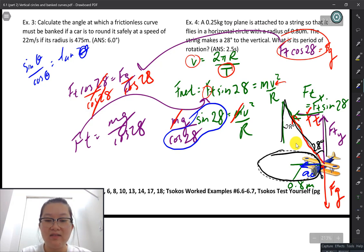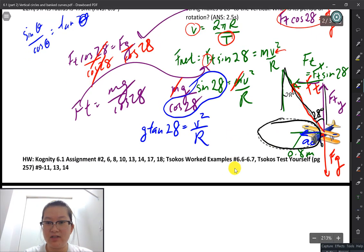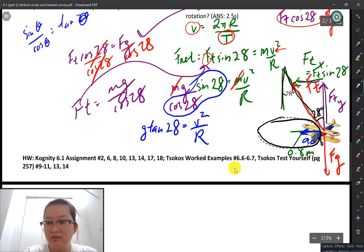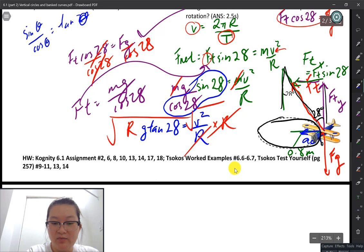So we're going to be left with g tan of 28 is going to be equal to V squared over R. Okay, V squared over R. Let's solve for V first. Let's do that. So I'm going to multiply R up. Okay, so it's going to look like this. And I'm going to need to take the square root of the whole thing afterwards, which will leave me with V is equal to the square root of Rg tan of 28.